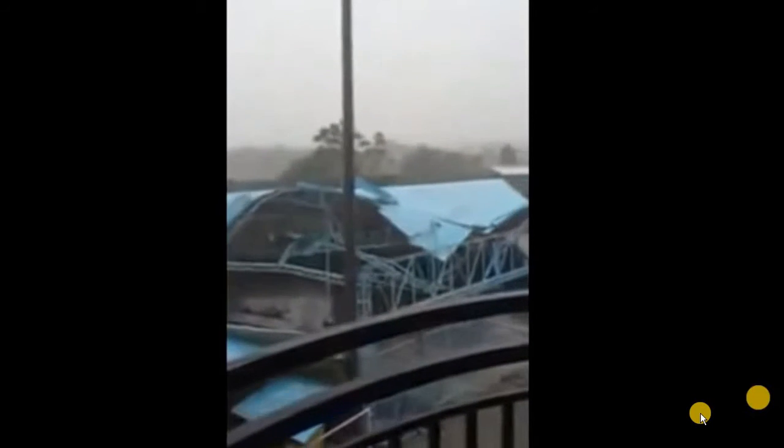During heavy storms, you have seen that the shade of any structure which are not designed for wind load are simply blown away. As you can see here, both the shade and the supporting truss are blown away and collapsing respectively by this strong wind.